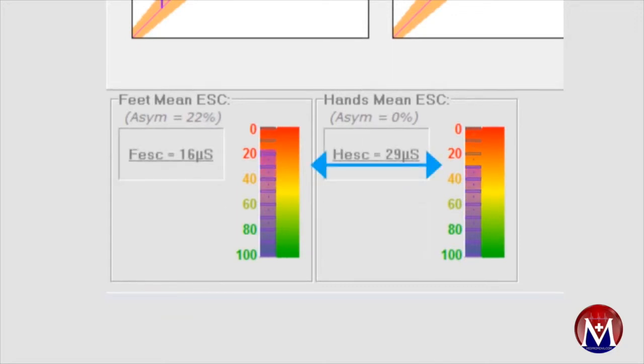A conductance of less than or equal to 40 microsiemens indicates poor sweat function and suggests possible advanced peripheral autonomic neuropathy.